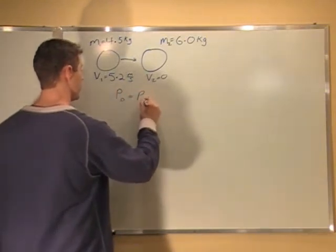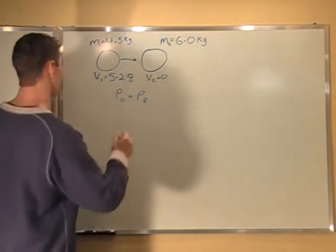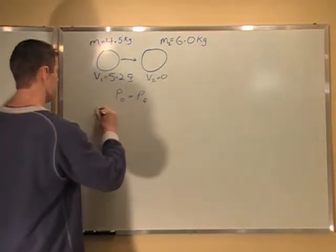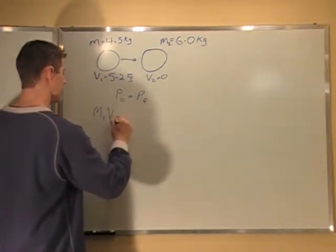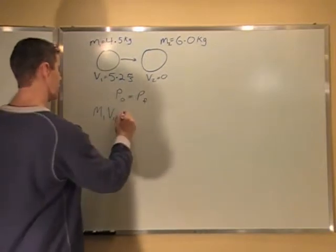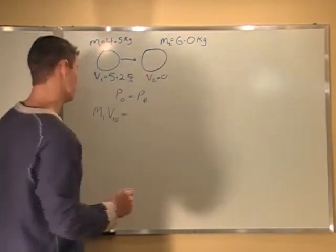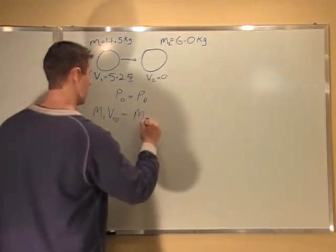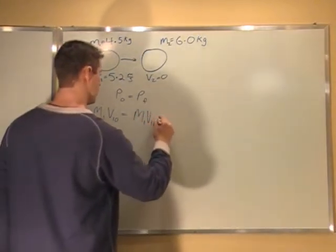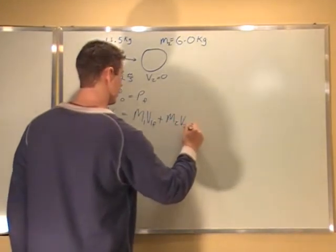Momentum initial equals momentum final. So I say the momentum of ball one, M1 V1 initial equals, because there's no momentum for the second ball initially, it's not moving, M1 V1 final plus M2 V2 final.